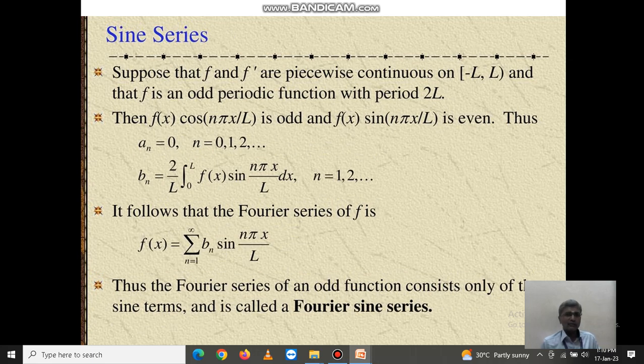Next, sine series. So automatically a0 and an both are 0. We have only bn value, that is bn equals 2 over l integral from 0 to l of f(x) sin(n pi x over l) dx, when n equals 1, 2, and so on.